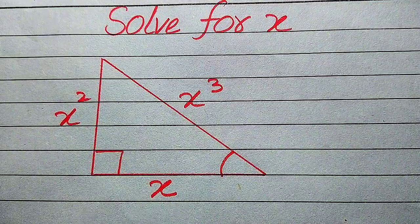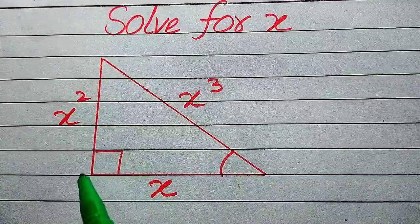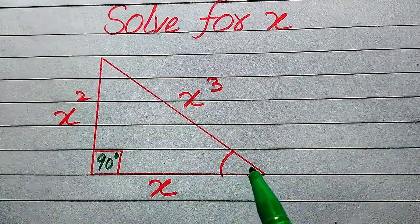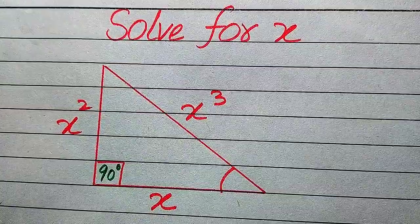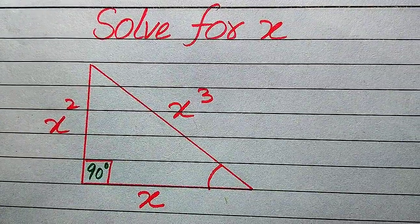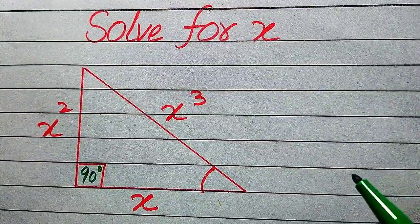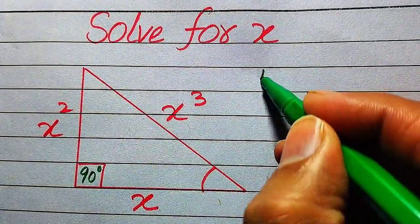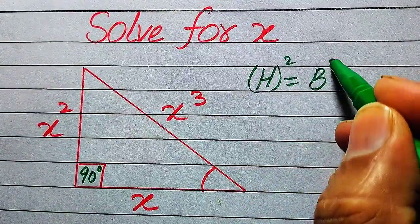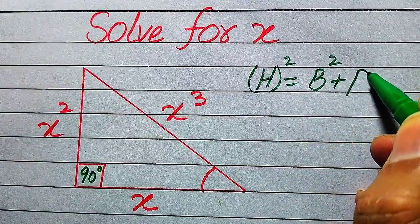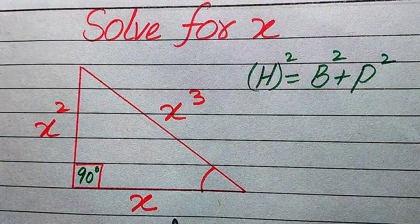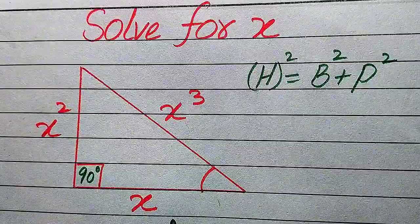This is a right triangle, and we know that this angle is the 90-degree angle. In a right triangle, the Pythagorean theorem holds, and it is stated as: hypotenuse² = base² + perpendicular².